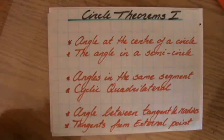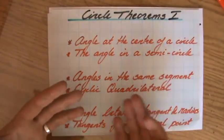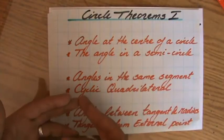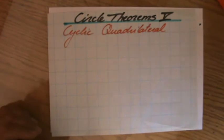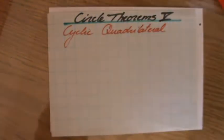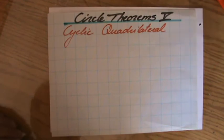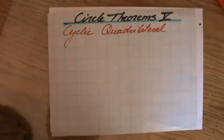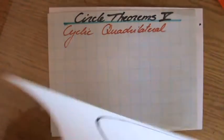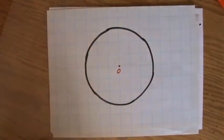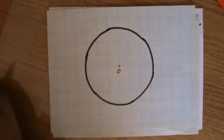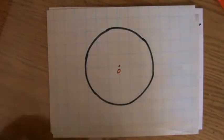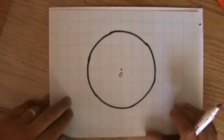The last circle theorem we're going to do now is the cyclic quadrilateral. I'm not going to prove the entire thing to you — I need a blank piece of paper. Here we go — it has a circle on it. I'm not going to prove it to you entirely — cyclic quadrilateral.